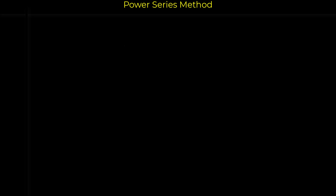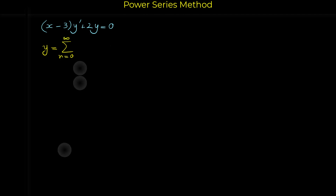In this video, I'm going to show you an example of solving a differential equation with the power series method. The differential equation is (x minus 3)y prime plus 2y equals 0. The first step is to suppose the solution of the differential equation to be equal to a general power series in the form of sigma, n from 0 to infinity, a_n x to the n.